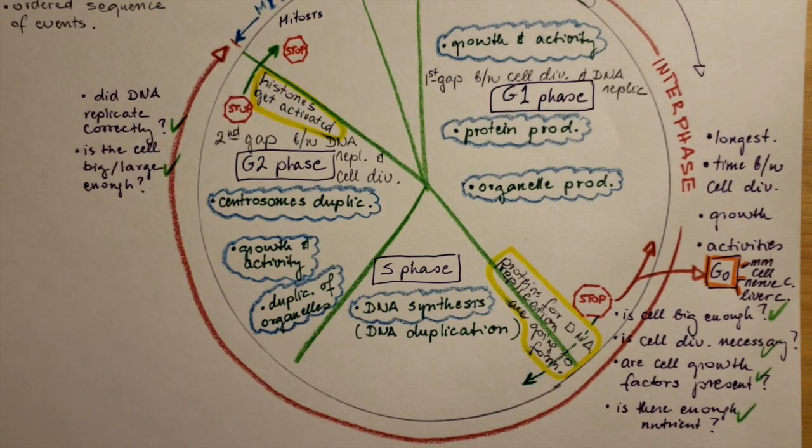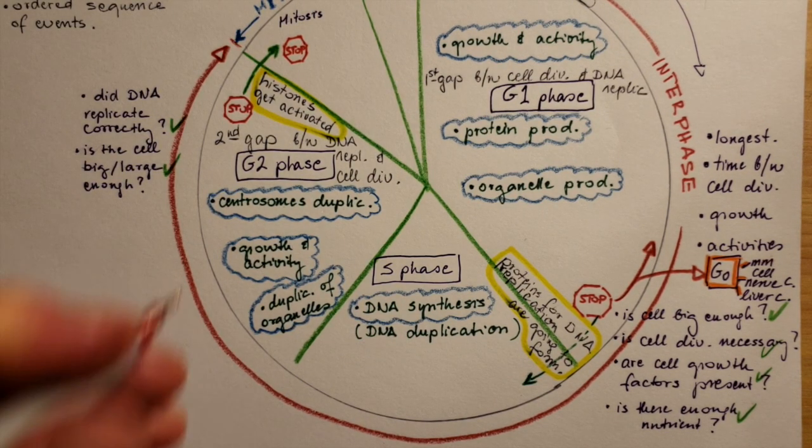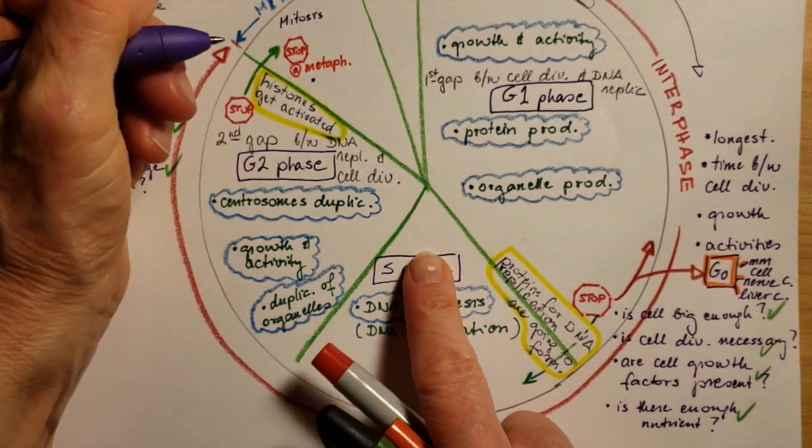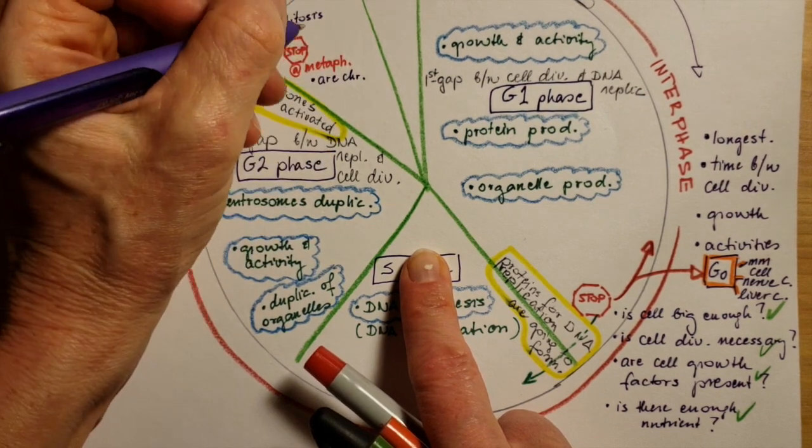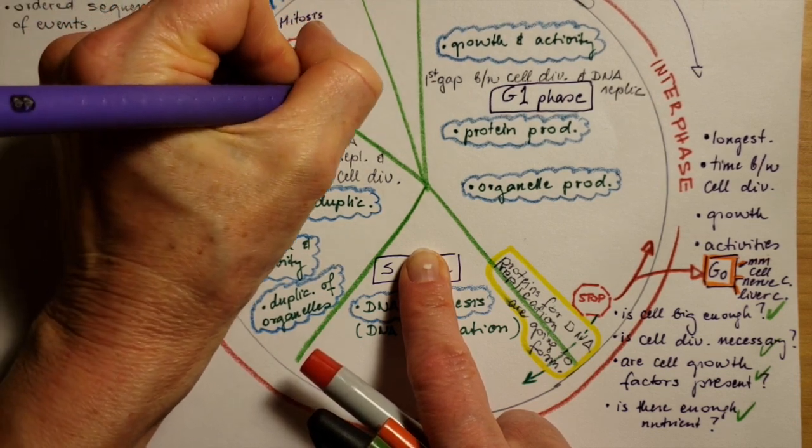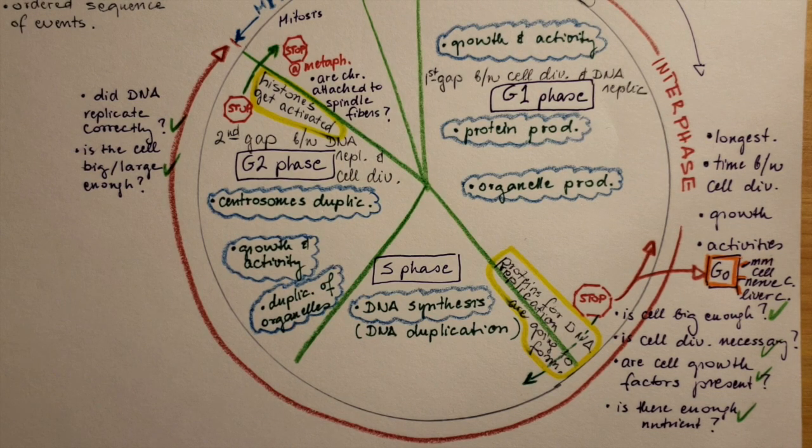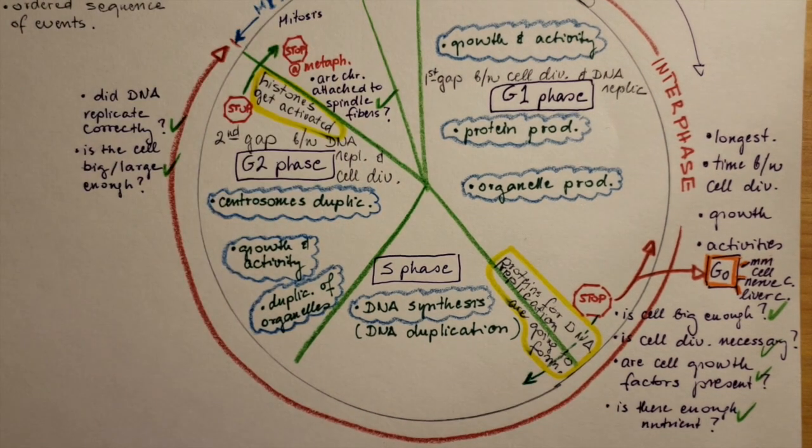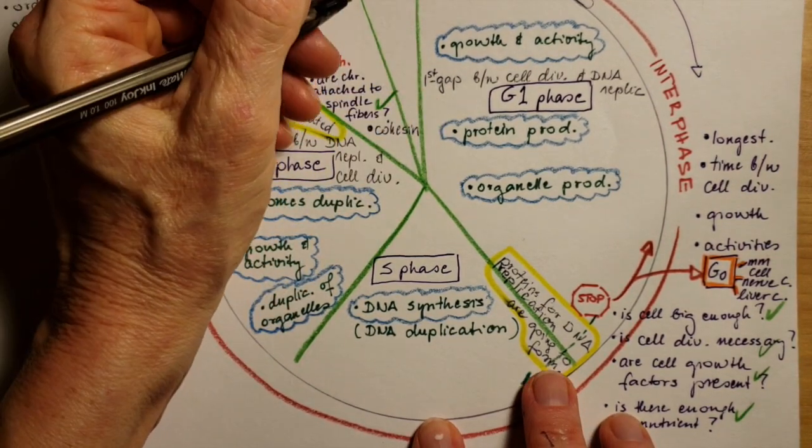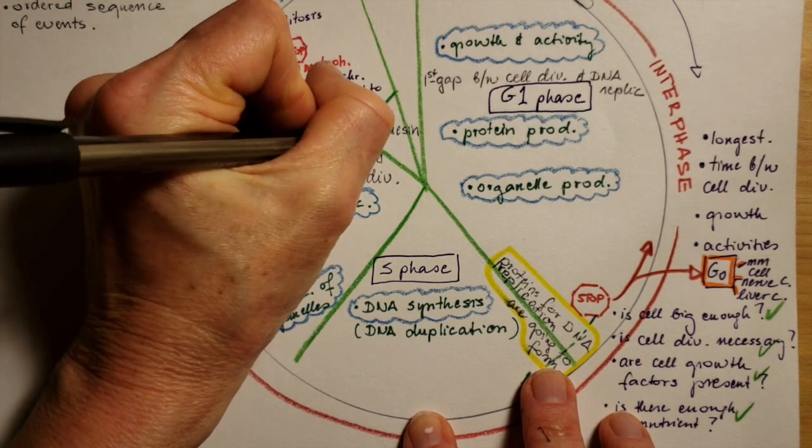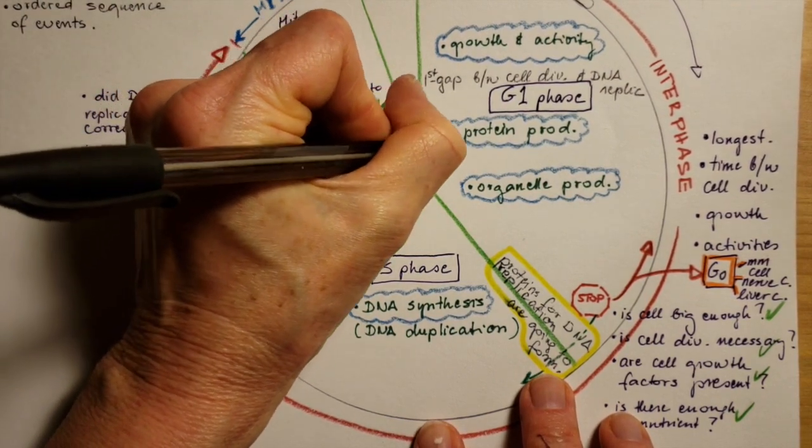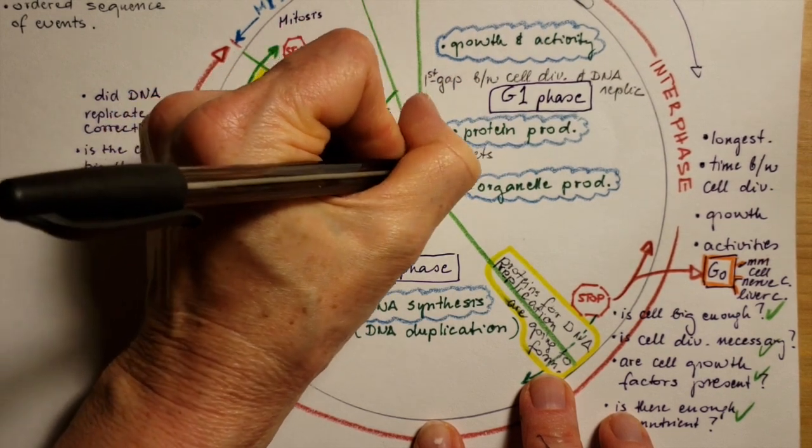So here in the beginning of mitosis, during metaphase, there is a stop sign where the cell checks whether the spindle fibers are attached to the chromosomes, to the sister chromatids, and will they be able to pull them apart evenly. If the answer is yes for that question, the cohesin protein breaks down and the separase enzyme gets activated to separate the sister chromatids from each other. We will learn about that during mitosis and meiosis.